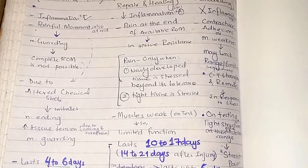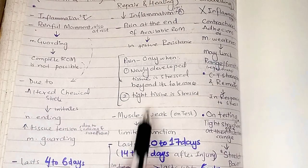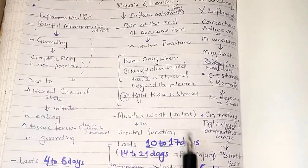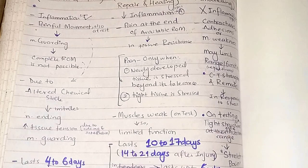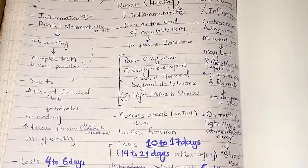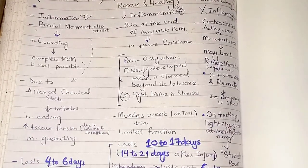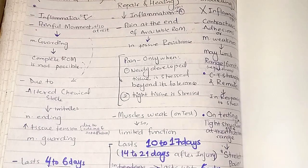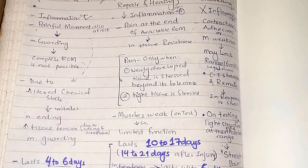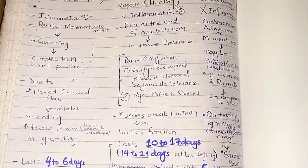The condition limiting function in the subacute stage is muscle weakness, as muscles are weak on testing. This is the cause of limited function. In the acute stage, painful movement was caused by an altered chemical state, which led to muscle guarding, and muscle guarding led to incomplete range of motion. We will also discuss the chronic state and what happens there that limits range of motion.